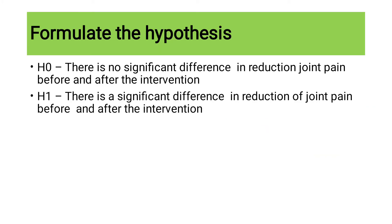Next, you have to formulate the hypothesis. H0 is the null hypothesis; H1 is the alternative or research hypothesis. H0 states: there is no significant difference in reduction of pain before and after the intervention. The first step is to formulate the hypothesis which you will then test.